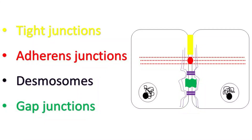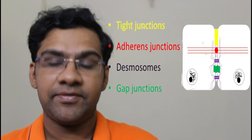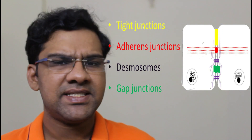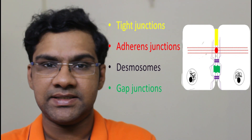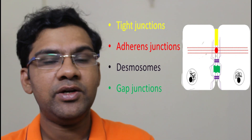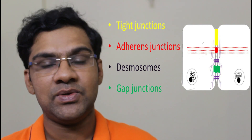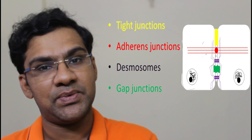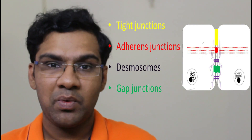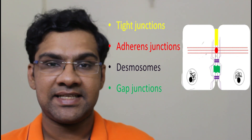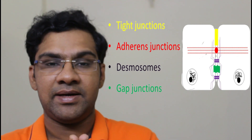Before knowing in depth about desmosomes, let's understand cell junctions as a basic. There are four different types of cell junctions known till now. The first one are gap junctions — these act as tunnels between two adjacent cells, helping in transmitting proteins and macronutrients from cell to cell.